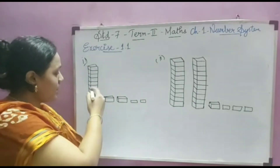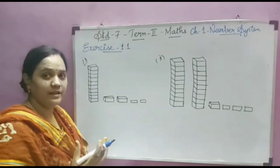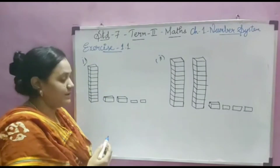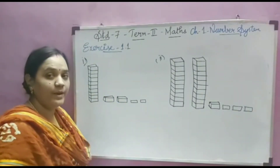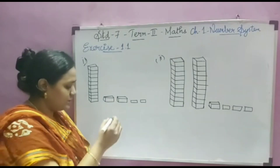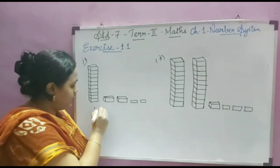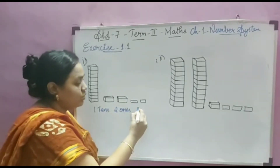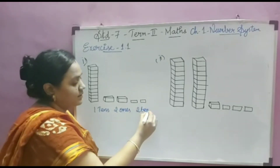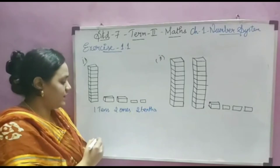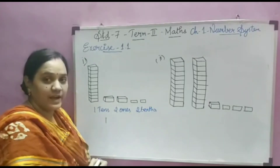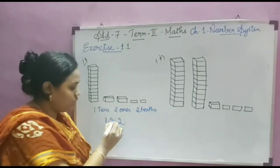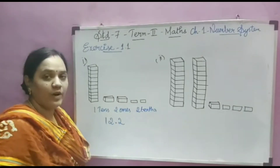So first we should count the whole number part. We count 10 boxes and 1 box plus 1 box — how many boxes totally? 12 boxes. So we have 1 tens box, 2 ones box, and 2 tenths box. So in tens place we write 1, in ones place we write 2, then in tenths place we write 2. So our answer is 12.2.